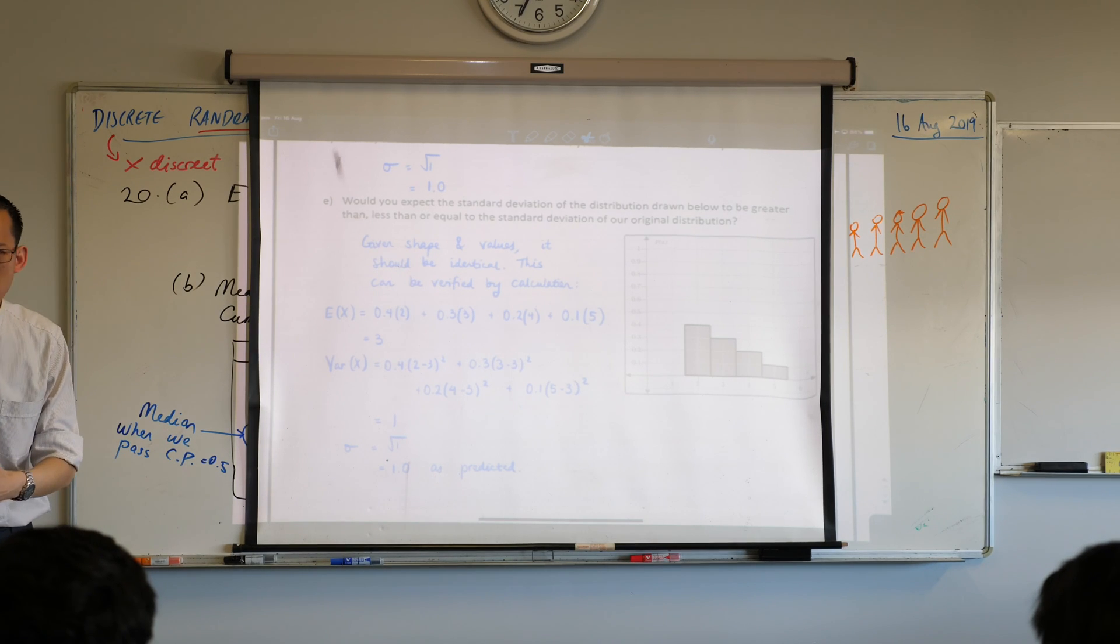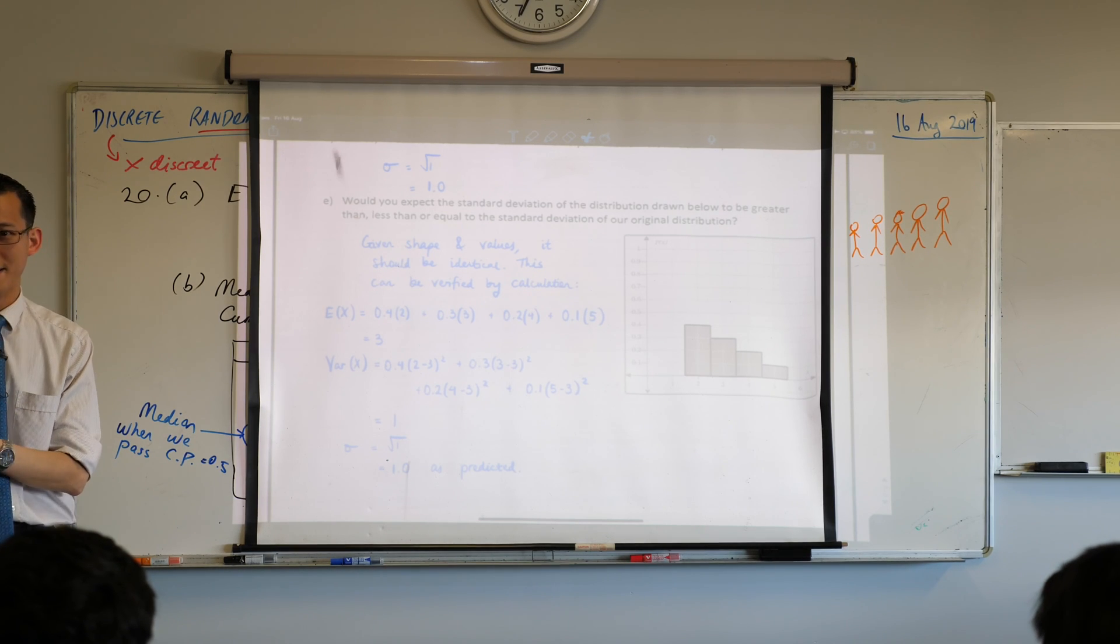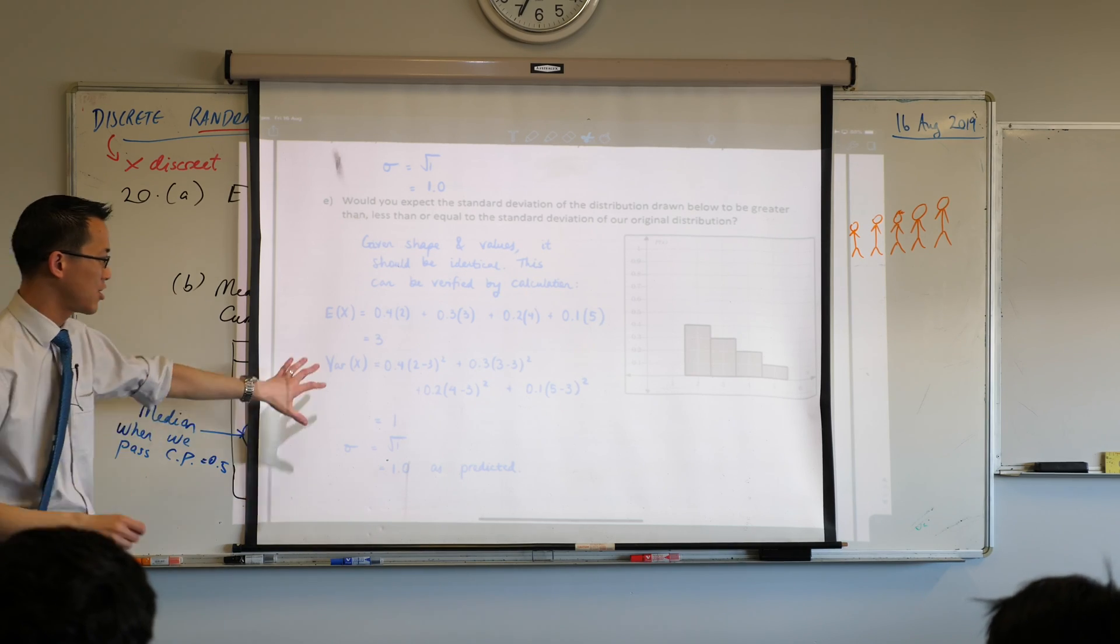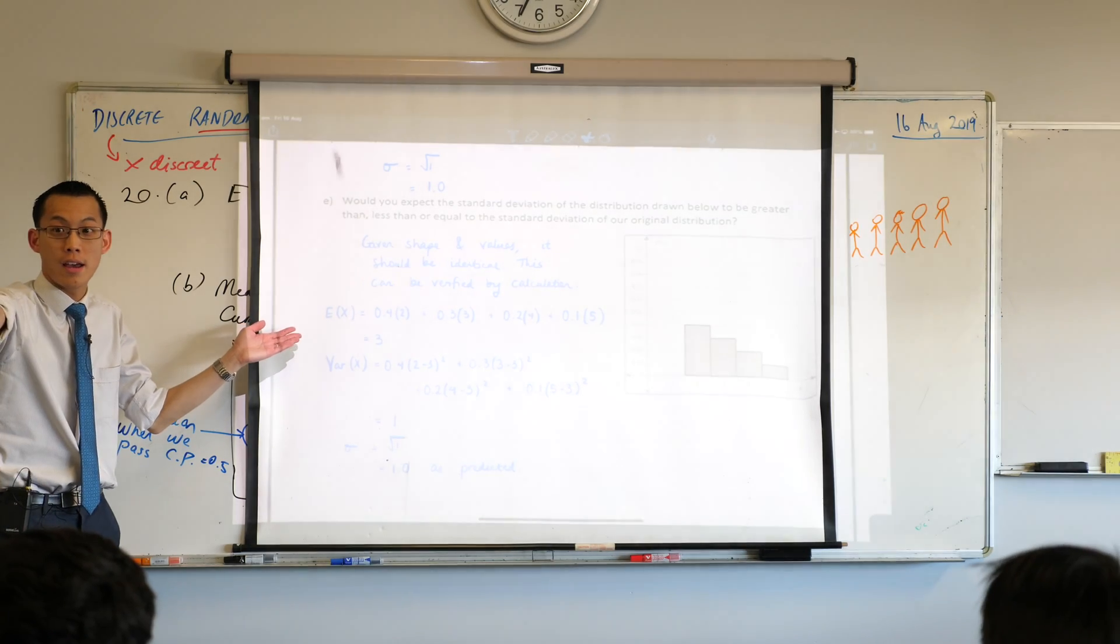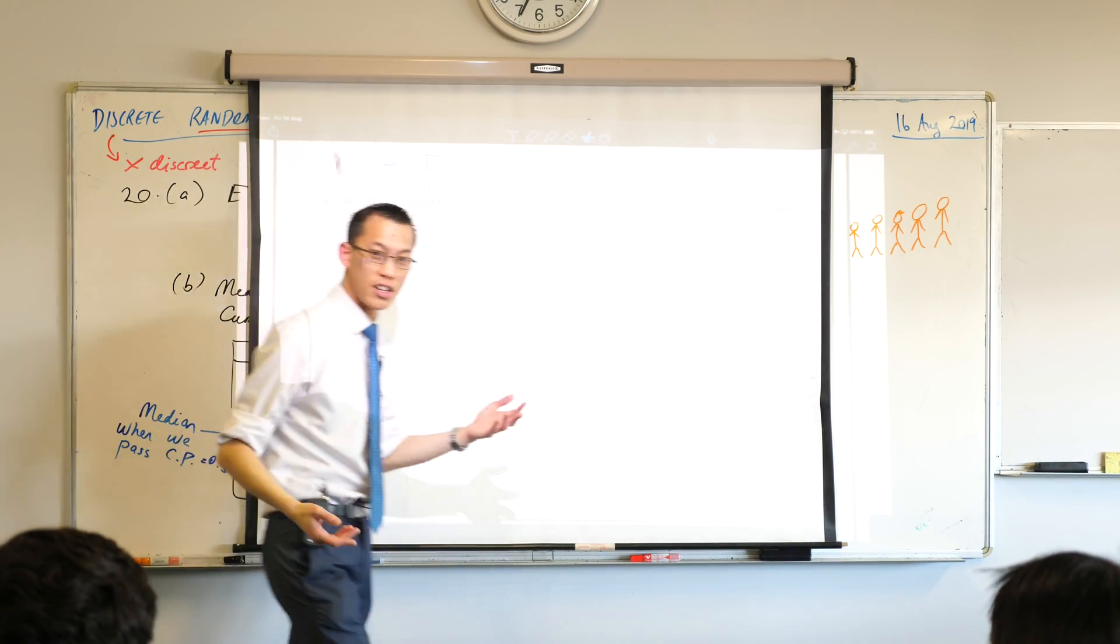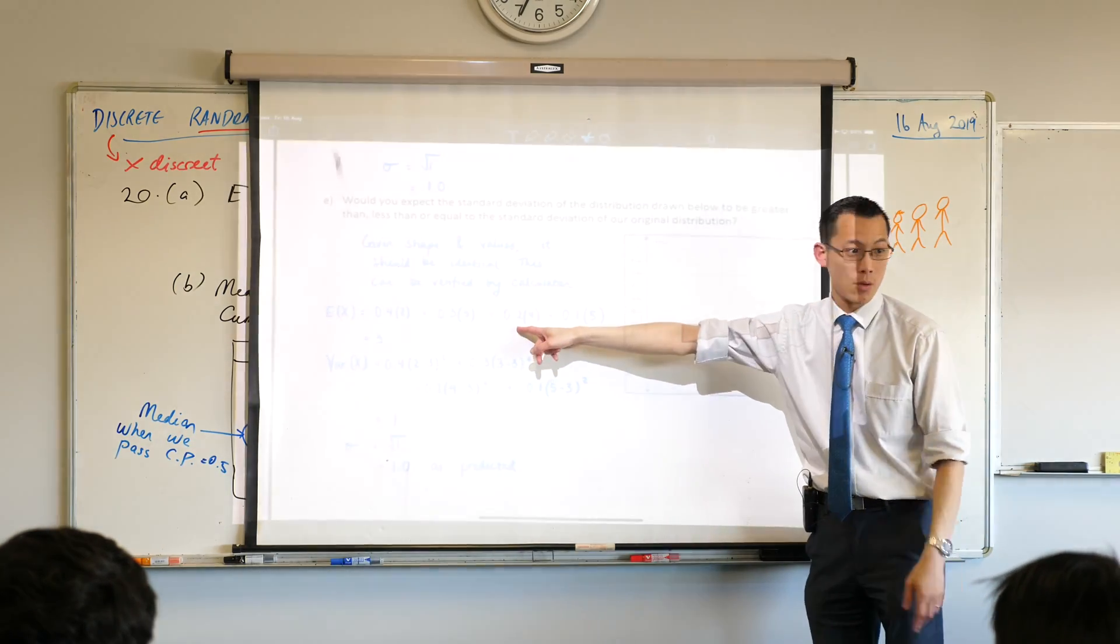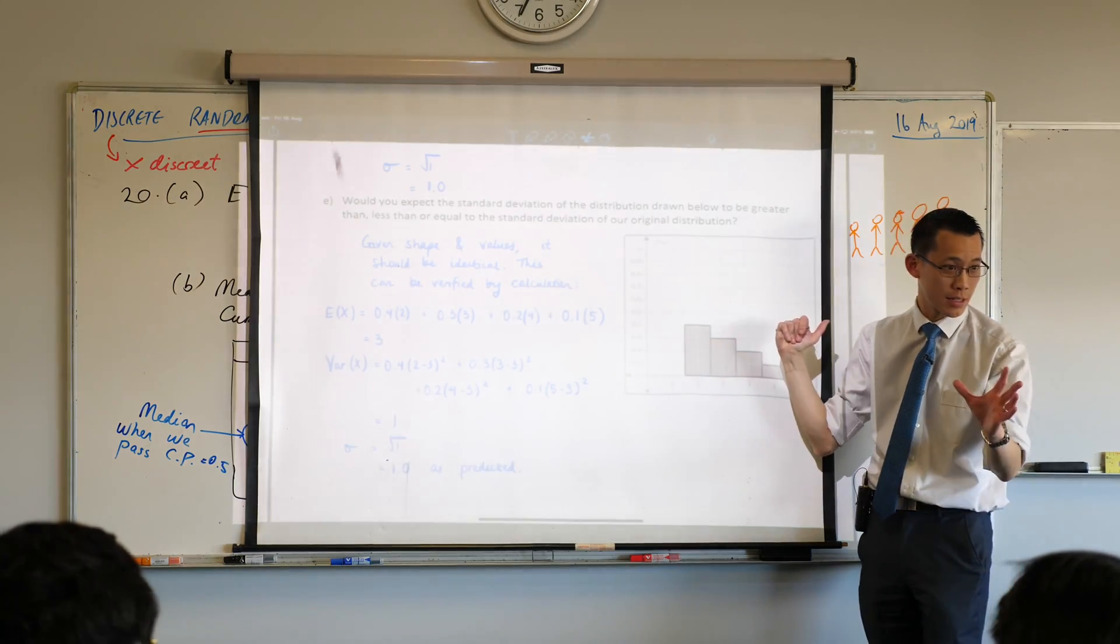One quick thing. Why is the expected value different, even though the standard deviation is the same? Let me ask it again. Why is the standard deviation and the variance the same, but the expected value is completely different. Why? There's more values that are lower. Very good. There's more values that are lower. This is 3, whereas the previous expected value you guys calculated was 4, because you're more towards the high end of town. Does that make sense?